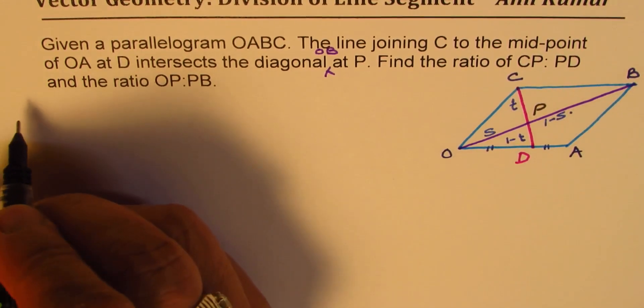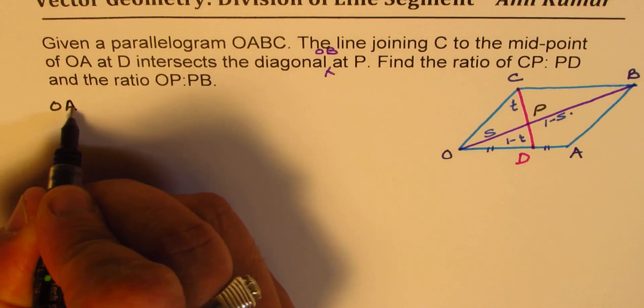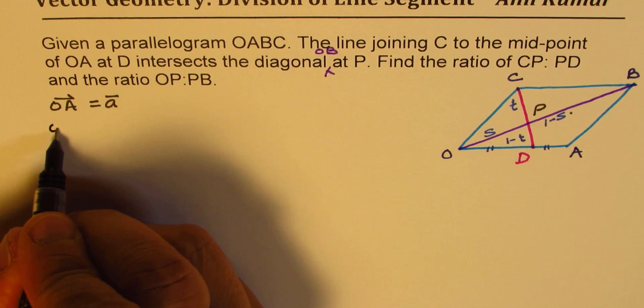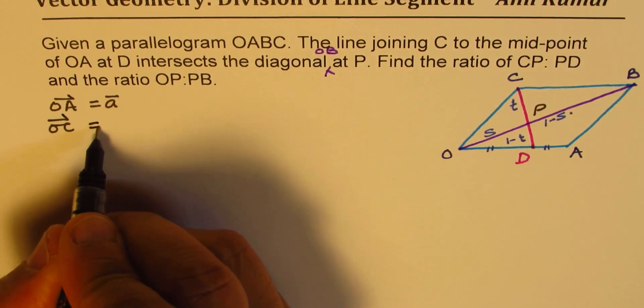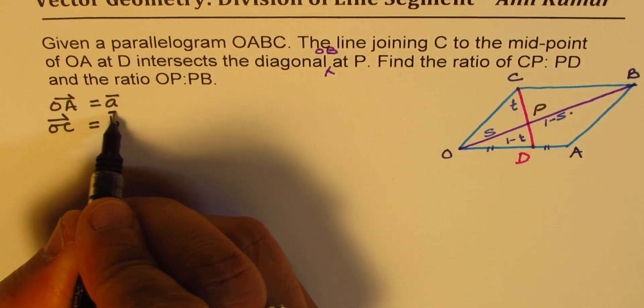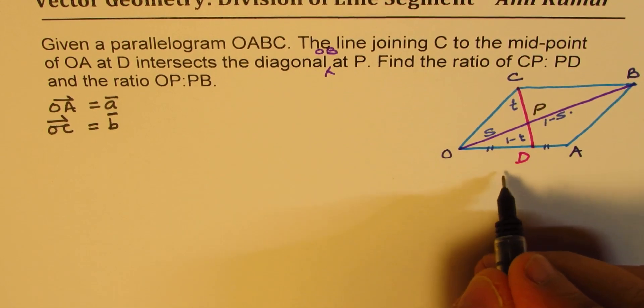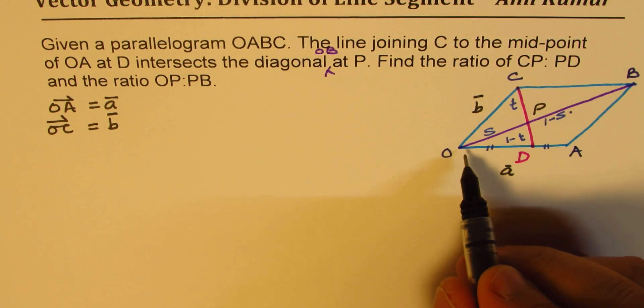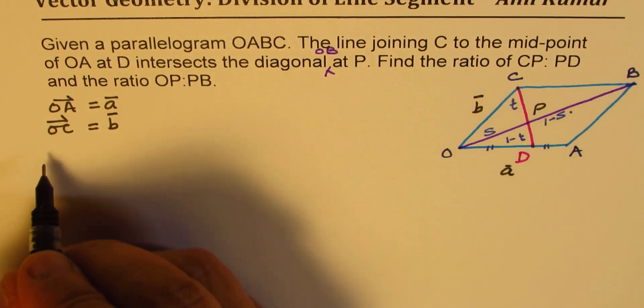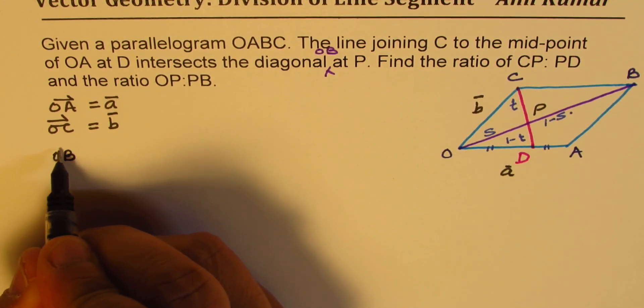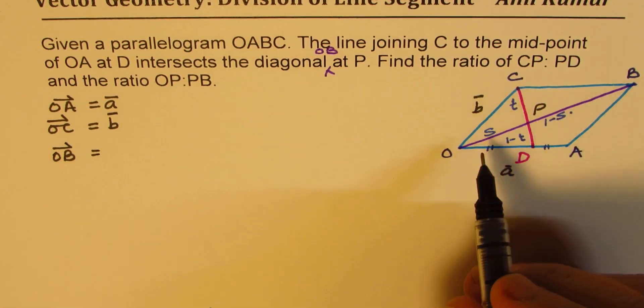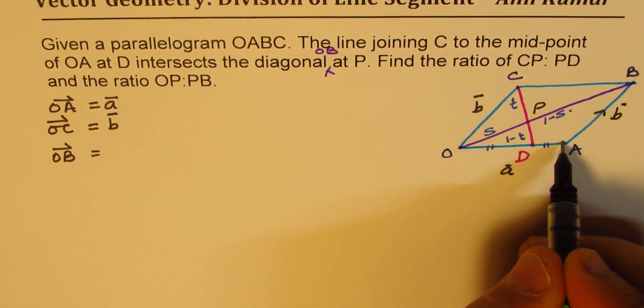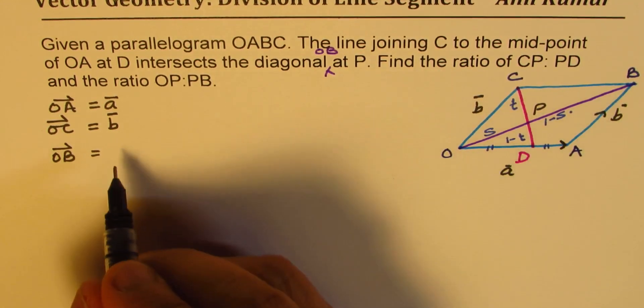So let's say that the vector OA, we'll write vector OA as vector A. We'll write vector OC as B. So let OA be A and OC be B. In that case, vector O to B will be what? O to B, so this is a parallelogram, so this is also vector B. So O to B will be A plus B.